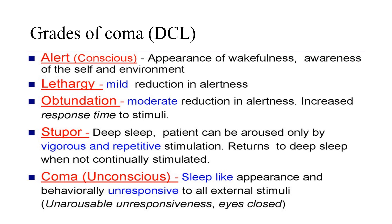We have to know the coma grade using the appropriate scale. We have either objective or subjective scales. Subjectively: alert means wakeful and aware of self and environment. Mild coma presents as lethargy — reduced alertness. Moderate as obtundation — moderate reduction in alertness, increased response time to stimuli. Stupor means deep sleep requiring vigorous stimulation to wake. Coma means totally unresponsive — a sleep-like state unresponsive to external stimuli.